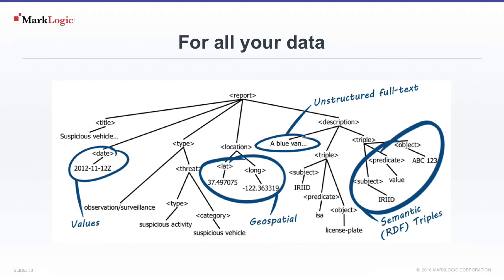Not only can MarkLogic handle all of your data as a whole, but each document you store could be a mixture of those information types. You can have a report that contains not only the main body of text, but also some properties for the report, where the report is applicable in the form of geospatial data, and even specific facts and relationships via RDF triples for semantics. This report can be submitted once in its entirety, and as soon as it is committed within MarkLogic, all of this data and its indexes will be available.